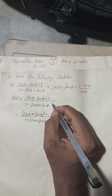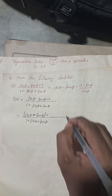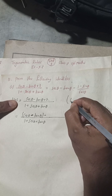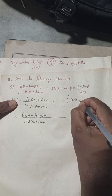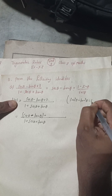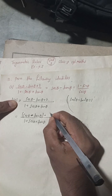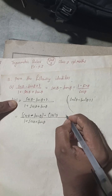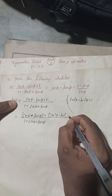Now, we know the formula: sec²θ − tan²θ = 1. So for the '1' in the numerator, I will substitute sec²θ − tan²θ.